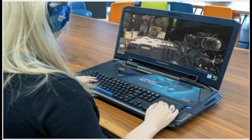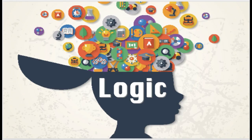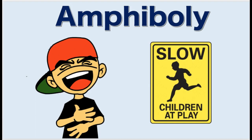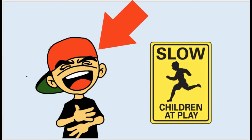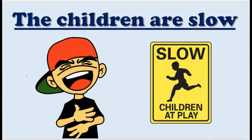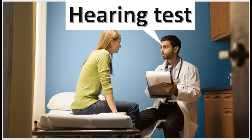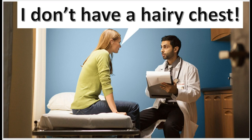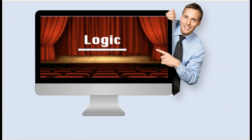Ladies and gentlemen, welcome to this episode of Logic. The Amphiboli Fallacy is the topic of this video — how this fallacy is committed when an arguer misinterprets an ambiguous statement and then draws a conclusion based on the faulty interpretation. This fallacy usually happens because of a mistake in grammar or punctuation by someone other than the arguer. The following illustration will provide an example.